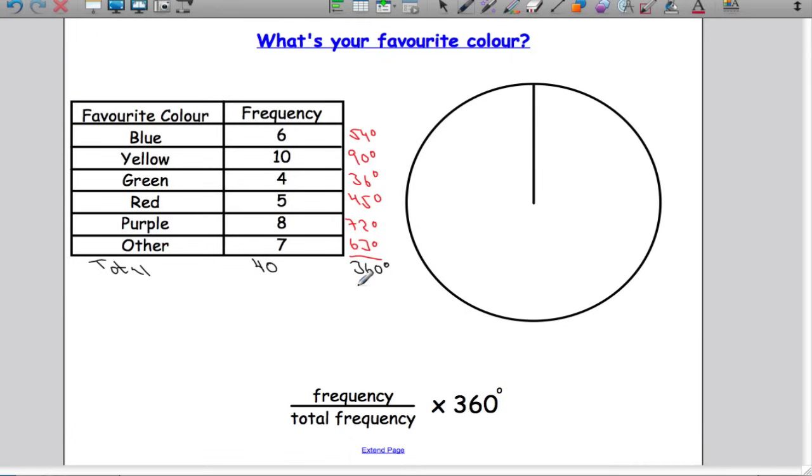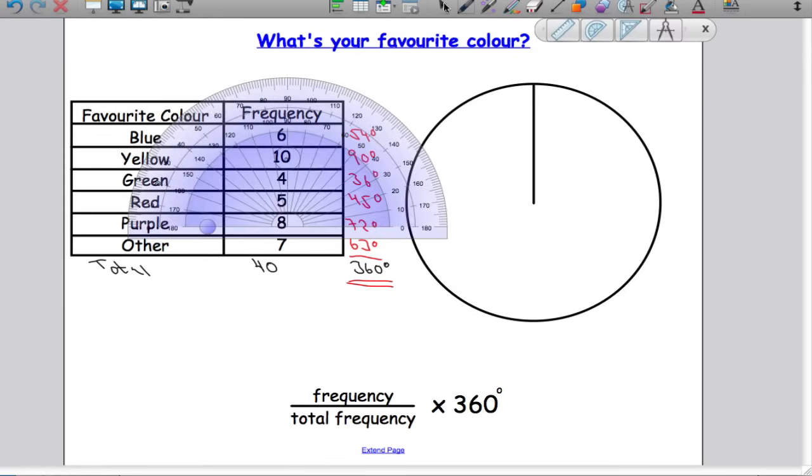Now to make sure that we've done it correctly, what we can do is add up all of these degrees and we should get 360. Let's check: 54, 90, 36, 45, 72, 63—add them up, and we get 360. Perfect, so we've done that correctly.